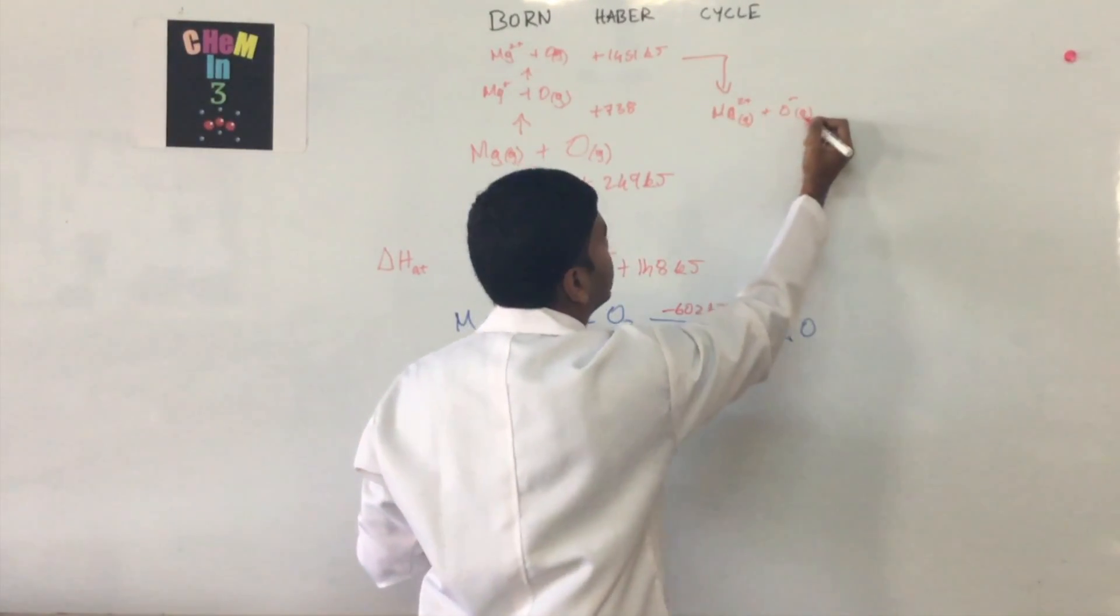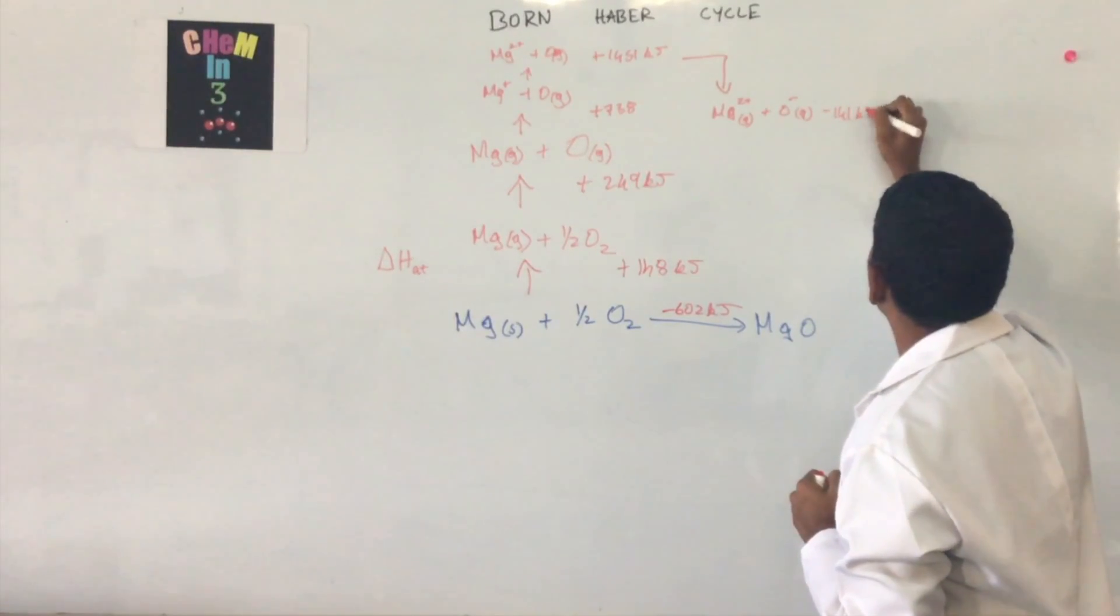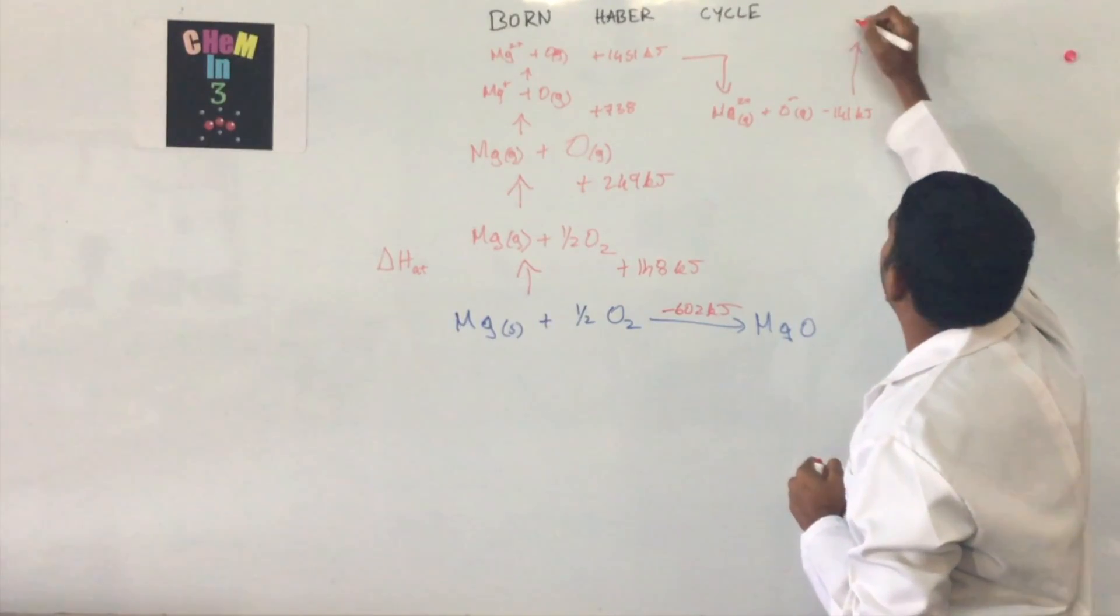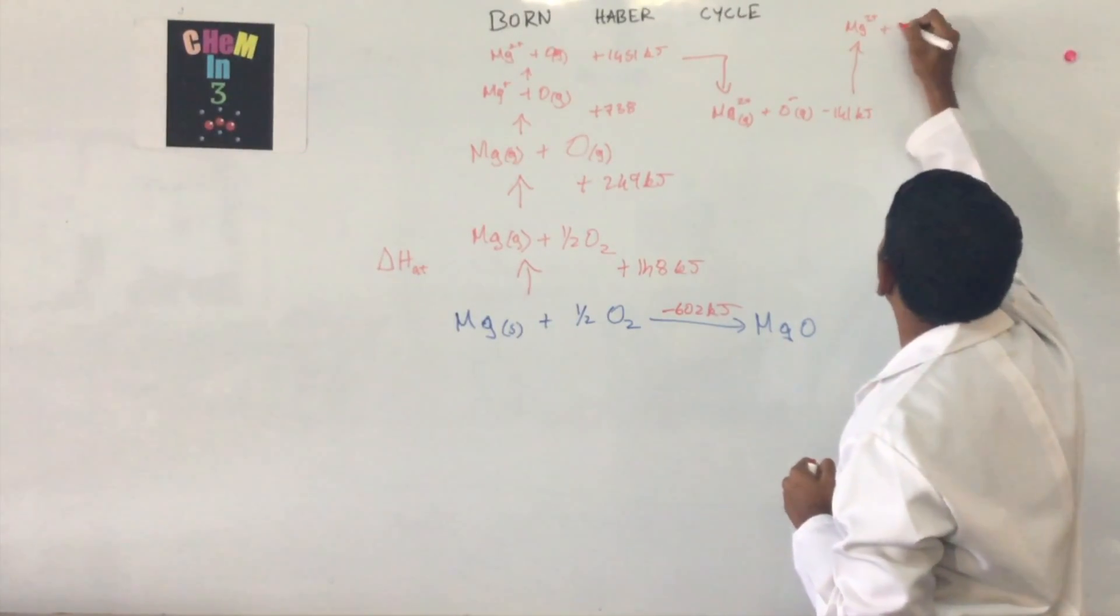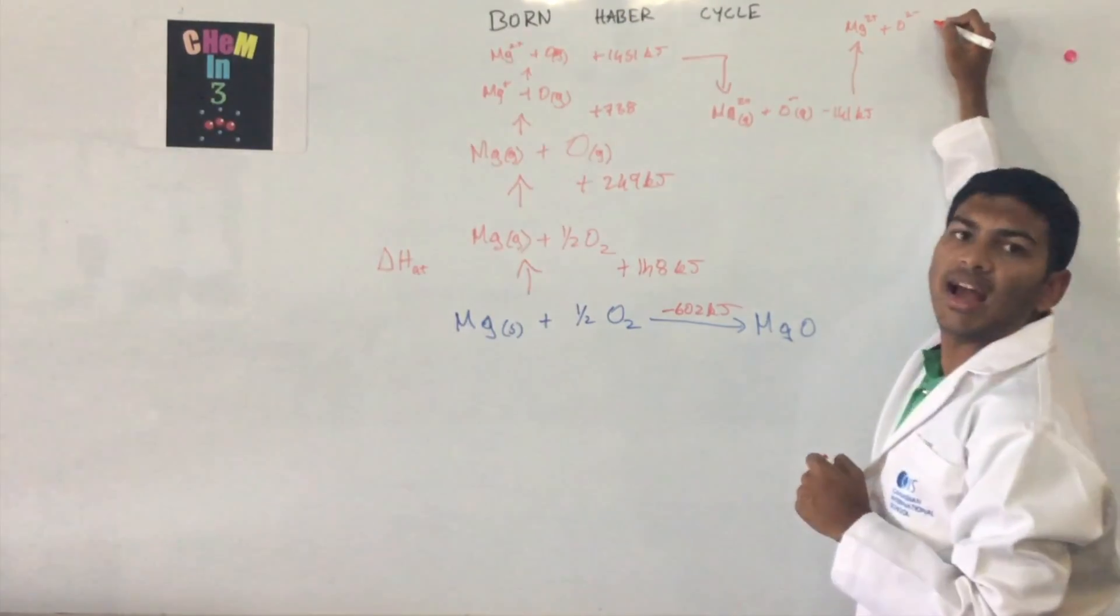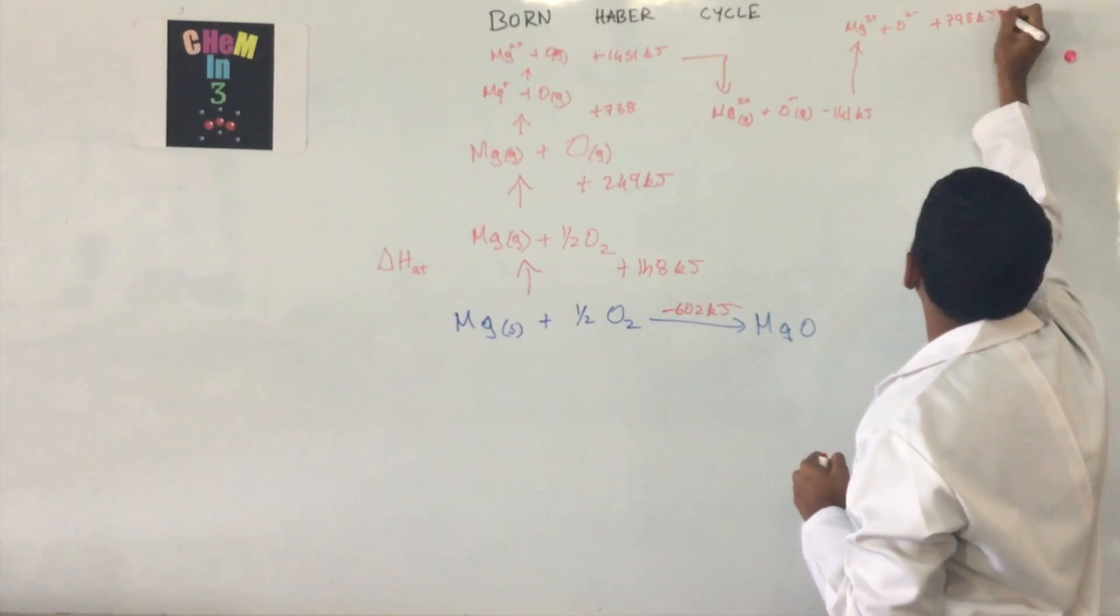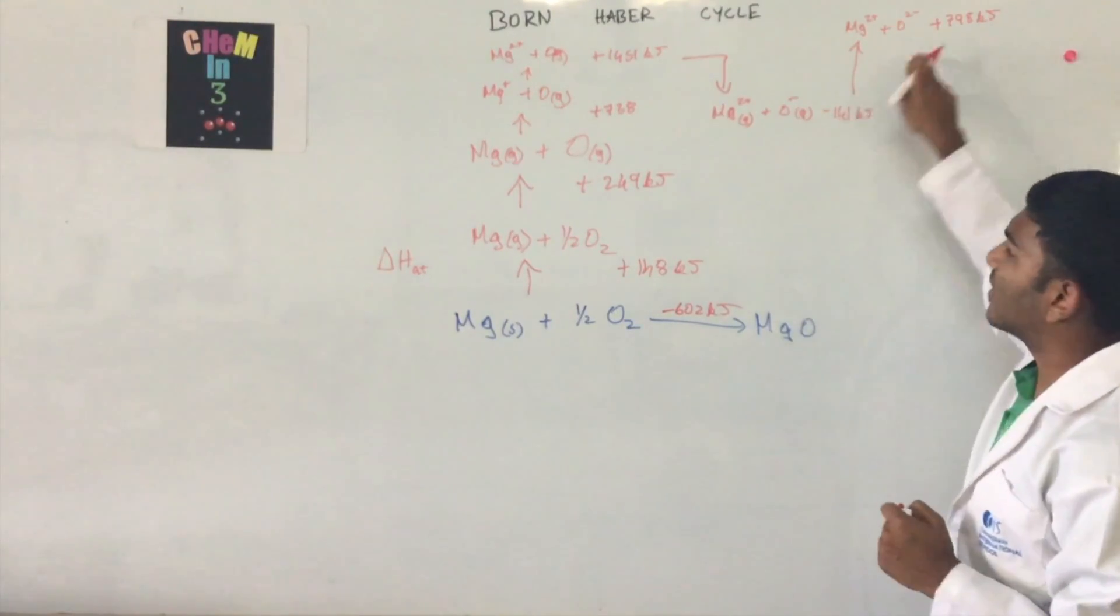which is actually minus 141 kilojoules. And we go back up for Mg2+ plus O2-, which is at plus 798 kilojoules.